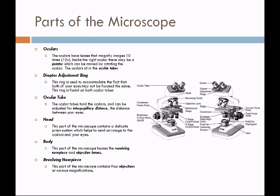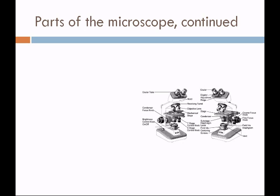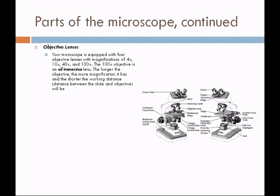The revolving nosepiece contains four objectives with various magnifications. Typically we'll find a 4x, a 10x, a 40x, and a 100x. This 100x objective is special — it's an oil immersion lens. It's a longer lens and it can only be used with oil. No other lens on the microscope is going to be used with oil. The longer the objective, the more magnification it has, and therefore it's going to be very close to the slide. The distance between the slide and the objective is called the working distance, and you always have to pay attention to it so you don't smash your slide or damage the objective lens.